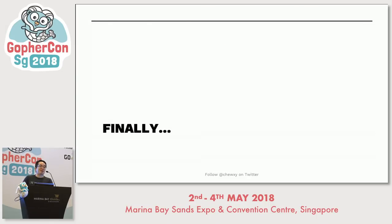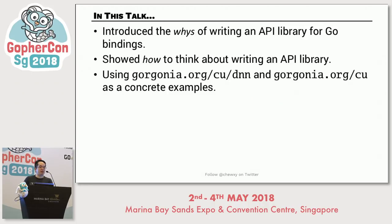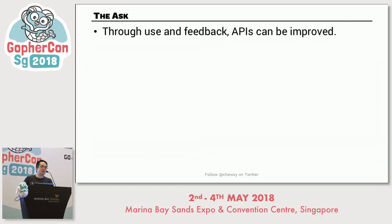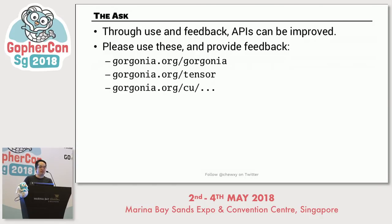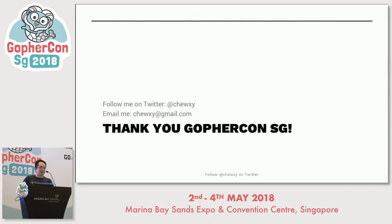Finally, we come to the conclusion. The source code for the demo is online. To recap: I introduced you to the reasons for writing an API library and Go bindings, showed you why and how, and used the CUDA library as a concrete example. The ask is simple: APIs can only be improved through use and feedback. So please use my libraries, provide feedback, and help out with the automatic generation. It's now about 80/20; it could go to 90/10. There are going to be many challenging problems to solve — I guarantee it. That's all, thank you.